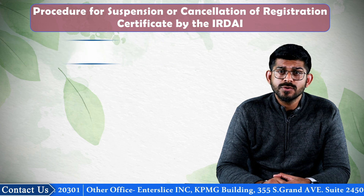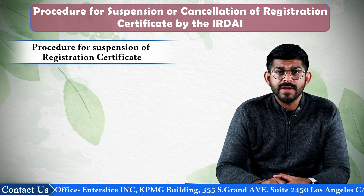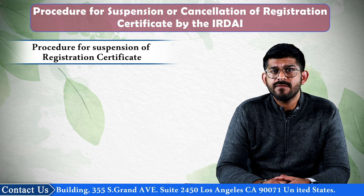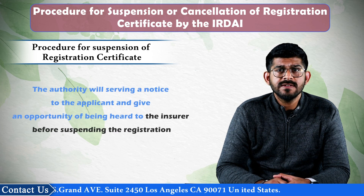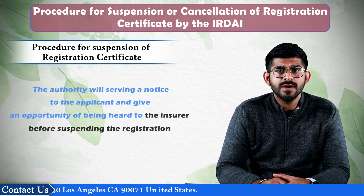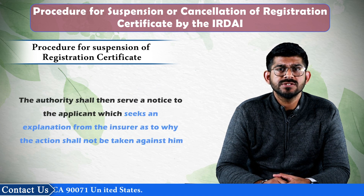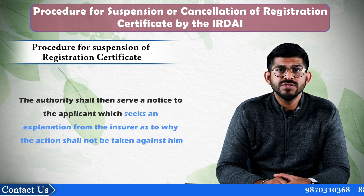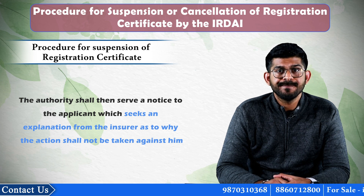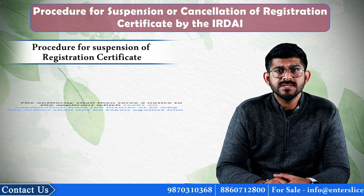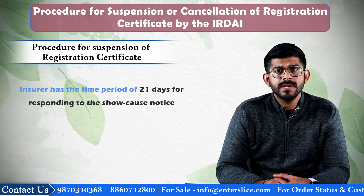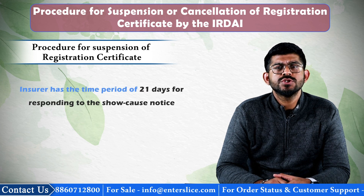Now we will discuss the procedure for suspension of the registration certificate. The authority, before suspending the registration certificate, shall consider the following steps. The authority will serve a notice to the applicant and give an opportunity of hearing to the insurer before suspending the registration. The authority shall then serve a show cause notice to the applicant, seeking an explanation from the insurer as to why the action shall not be taken against it. The notice shall include the charges and the reasons against which the action is sought. The insurer has a time period of 21 days for responding to the show cause notice.